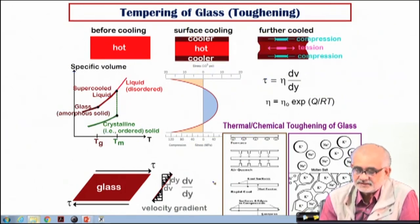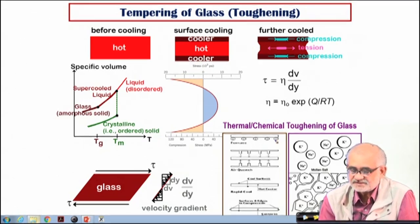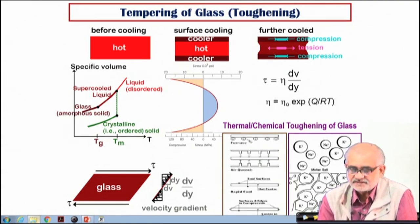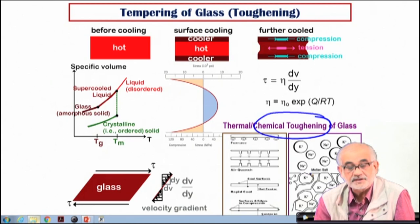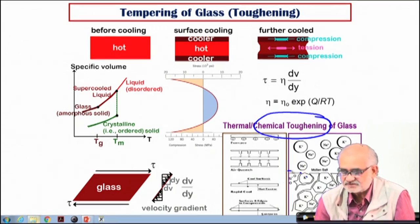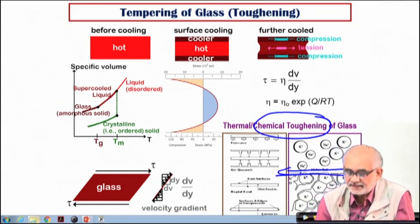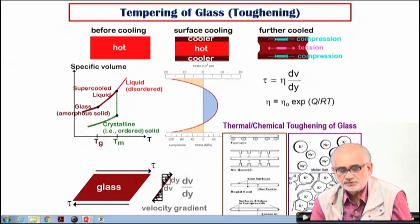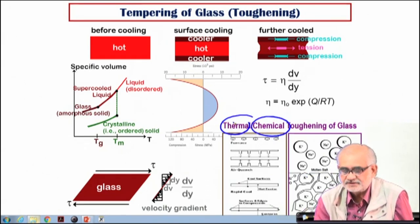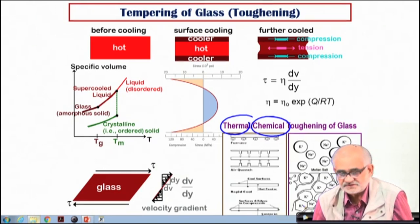We can also apply a similar strategy not by thermal treatment but by various chemical treatments. This is how you can cool glass sheets and make thermal tempering. You can also do chemical toughening of glass by allowing the glass to be exposed to certain chemicals which will create chemical reactions on the surface, bringing in certain ions. Because of the reaction, there will be substitutional reactions, and you will form a reaction product layer on the surface which will have bigger cations, hence there could also be the possibility of residual compressive stresses. This chemical treatment can also make the glass tougher. Both thermal tempering and chemical tempering or toughening of glass can make it more resistant to failure.